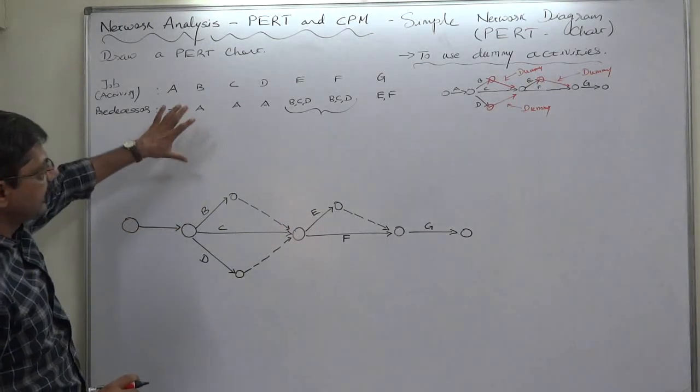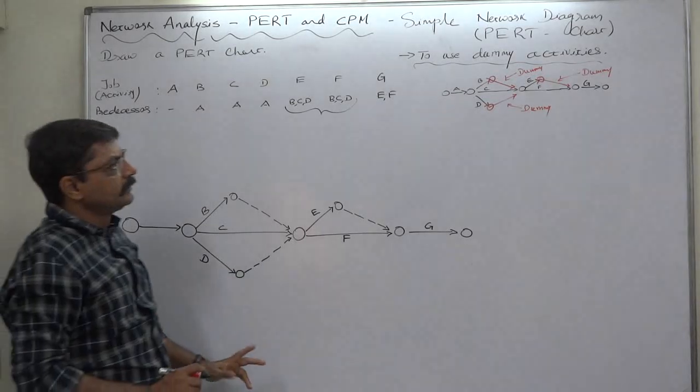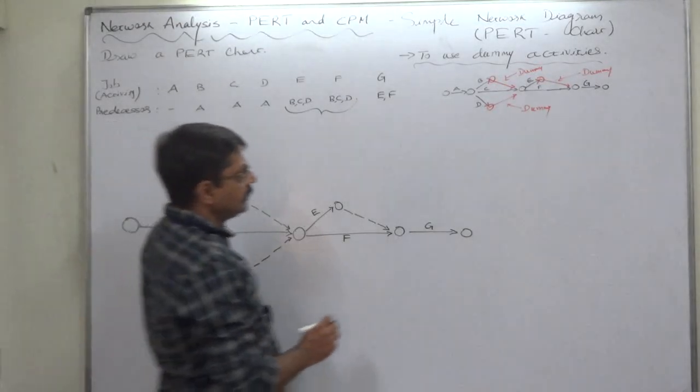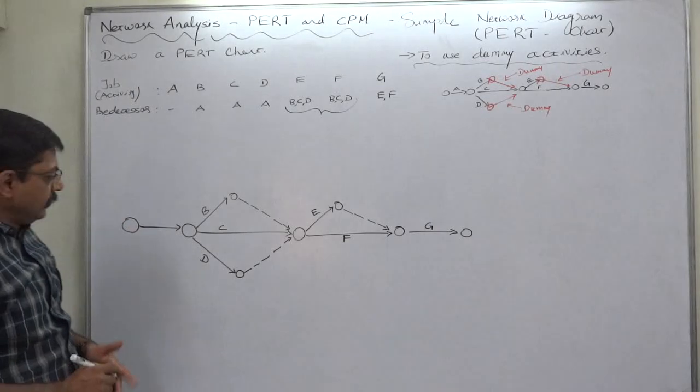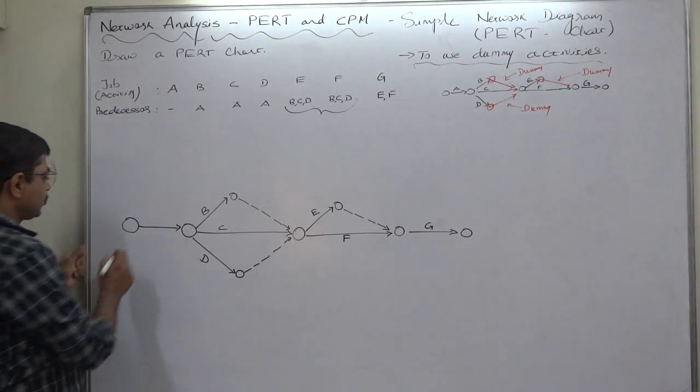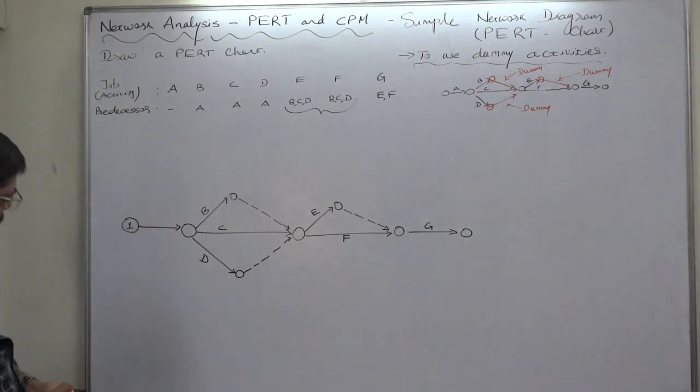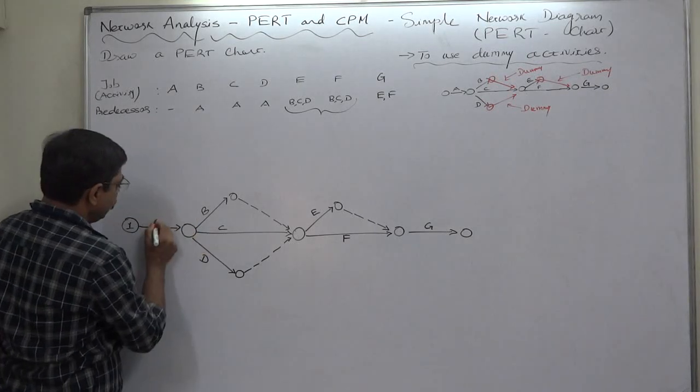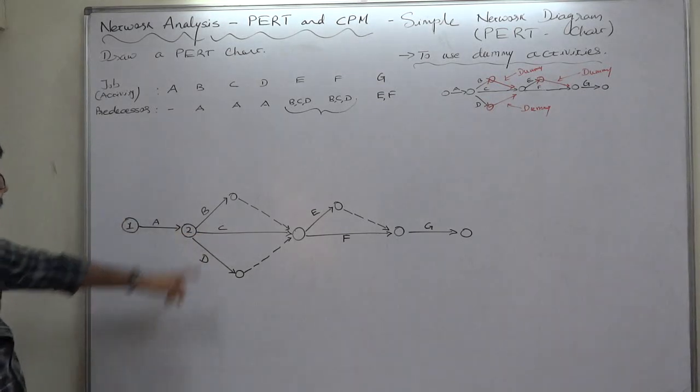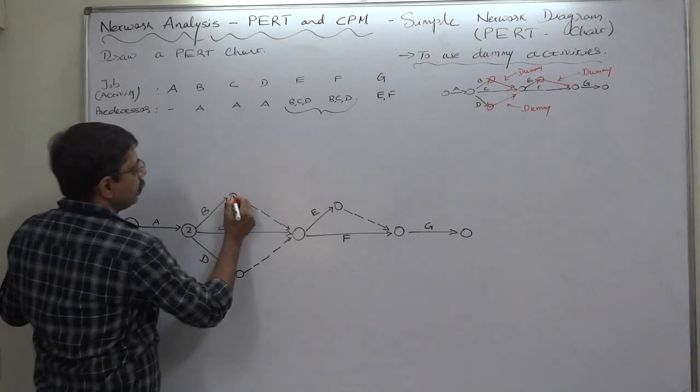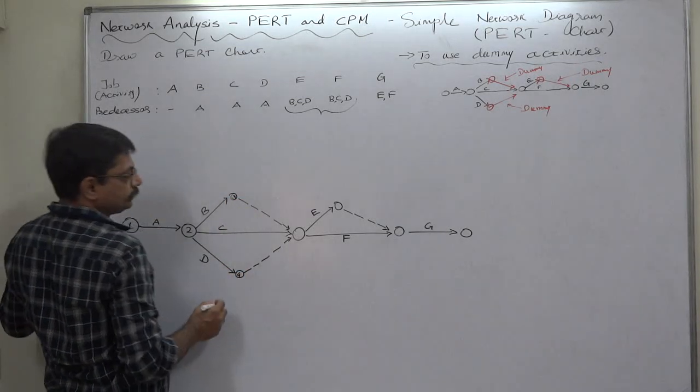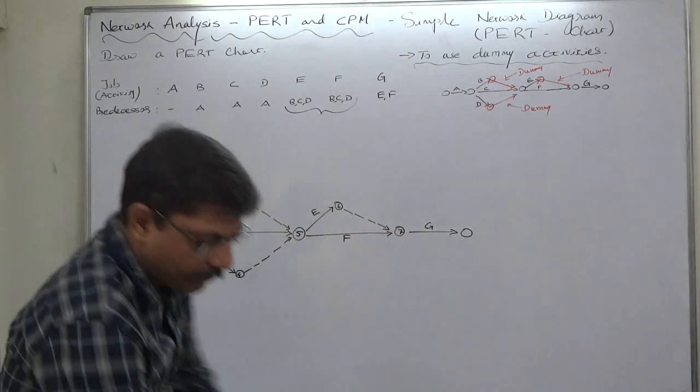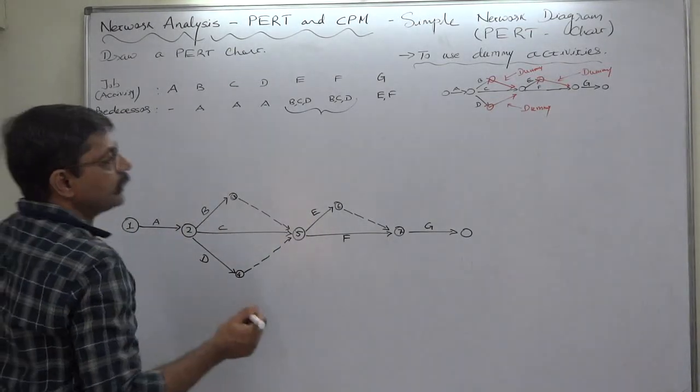And G. See, it is very simple to draw the PERT chart or network diagram for this particular data, but this is very easy only if you use the dummy activities efficiently. Now this is in terms of numbering. Again, as I have suggested, initial is always one. There is only one single activity or single event. Now we have two, so we shall follow the vertical order: three and four. Again very easy: five, six, seven. But the most important thing, at a cost of repetition...